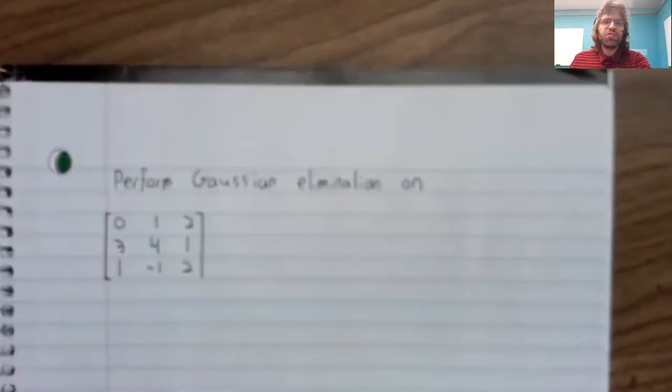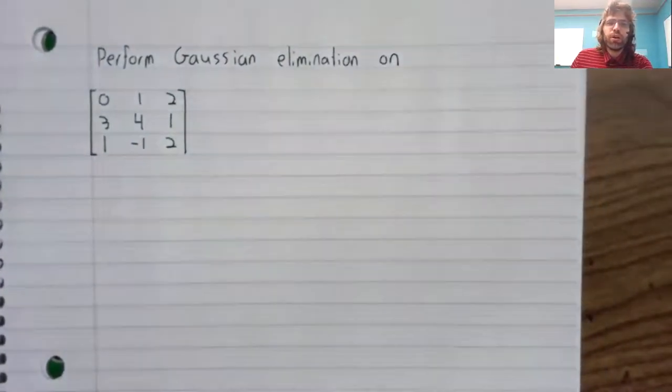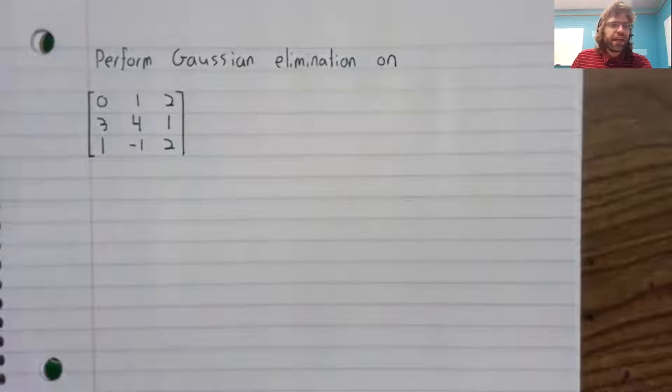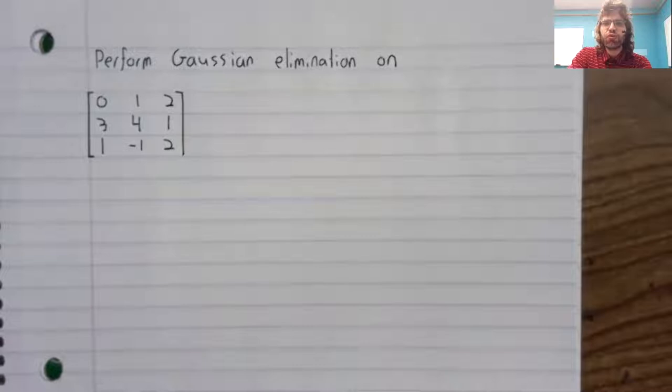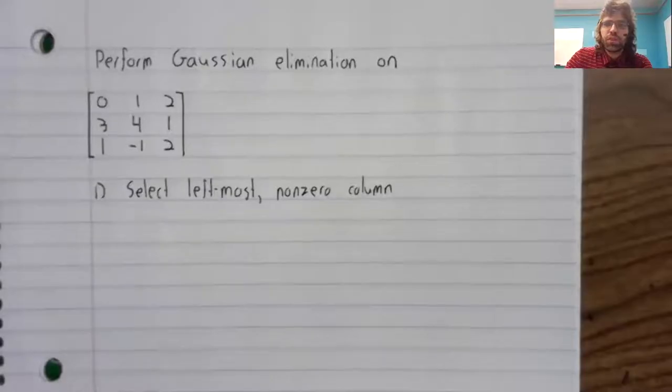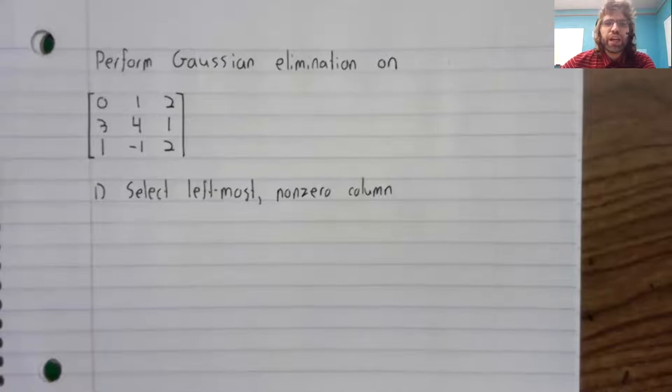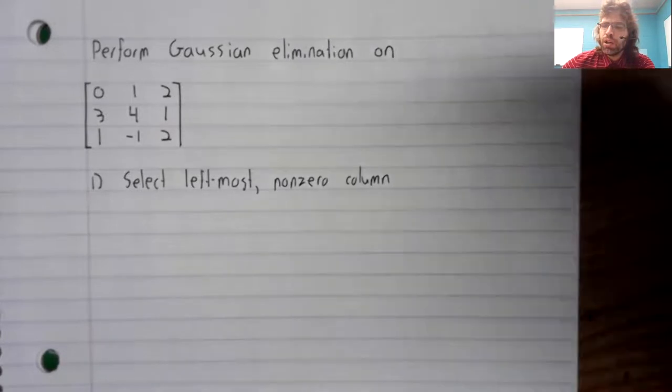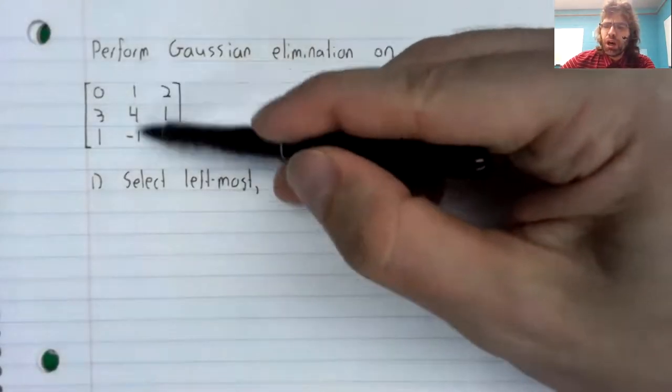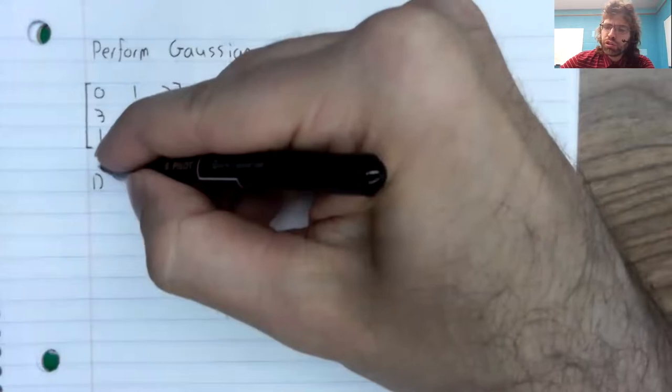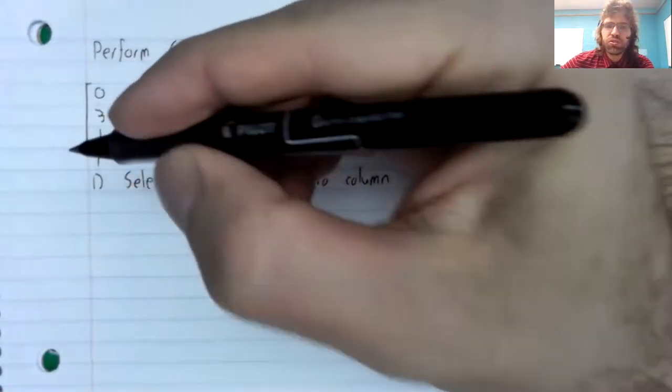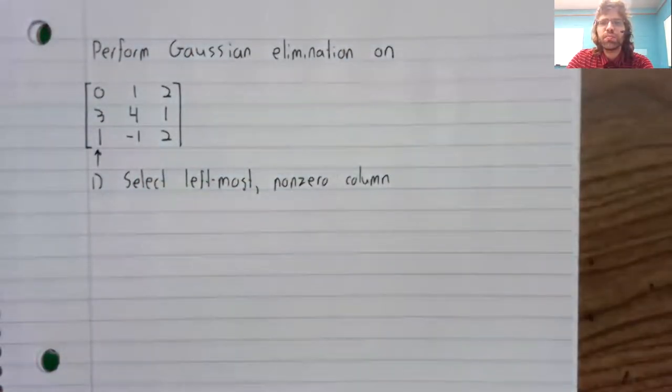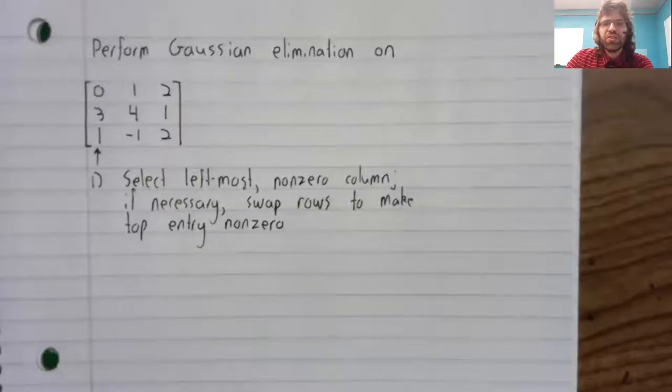To make this algorithm comprehensible, we'll look at it along with an example. The first step of this algorithm is to first select the leftmost non-zero column. All of these columns have non-zero entries. The leftmost is that. And if necessary,